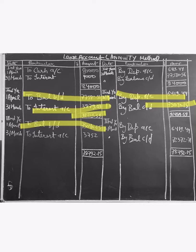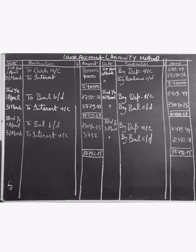Balance brought down: 75,040.15. Now we calculate interest on this amount at 5%. 75,040.15 times 5 divided by 100 equals 3,752.